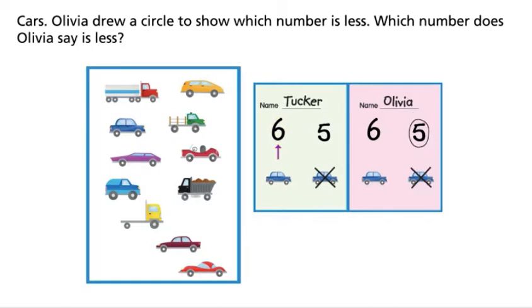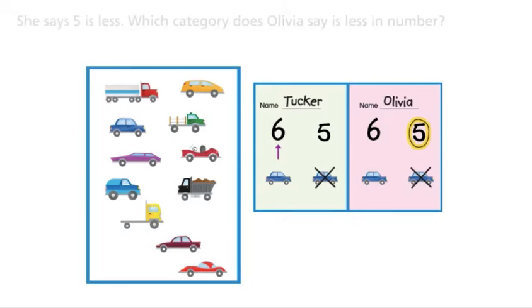Olivia drew a circle to show which number is less. Which number does Olivia say is less? She says five is less. Which category does Olivia say is less in number? Not cars.